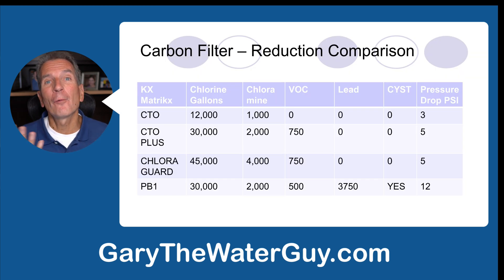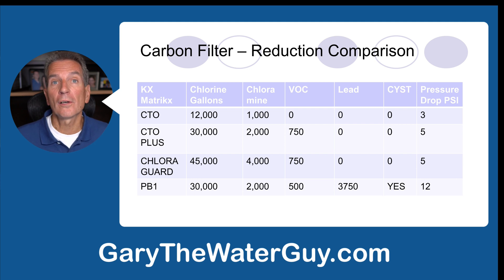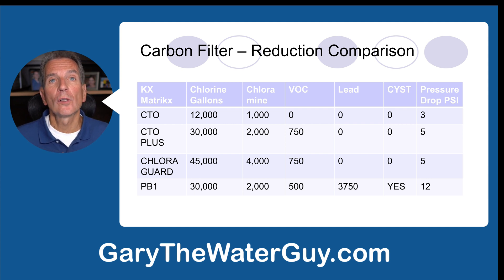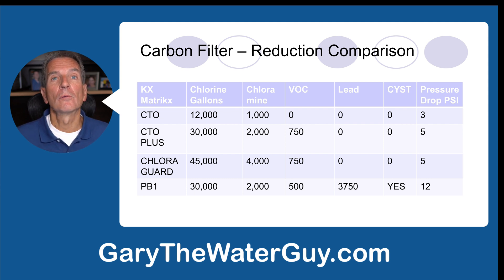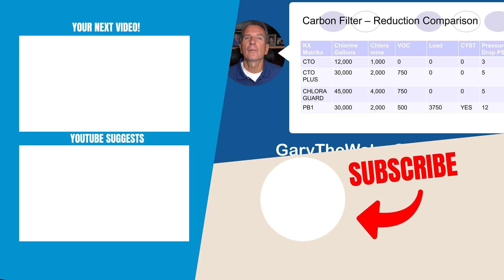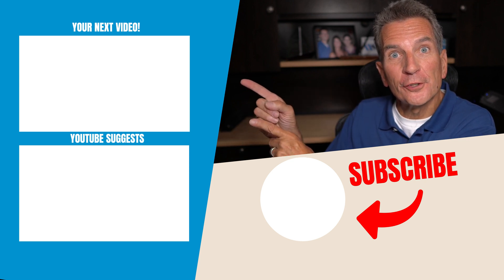So which is the best choice for your family? It depends on what you're trying to accomplish. If you just need a filter for your reverse osmosis system on municipal or well water, the CTO will do a pretty good job. If you're on a municipal water system with chloramines, you'll want to upgrade to the ChloroGuard. If you're on well water, go with the PB1 — it removes taste and odor, lead, VOCs, and cysts. Just note the 12 psi pressure drop and precede it with a 1 micron filter in your reverse osmosis system.